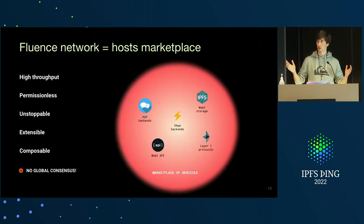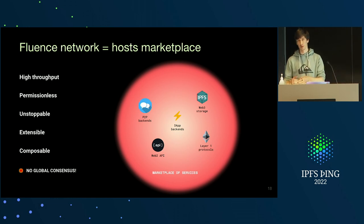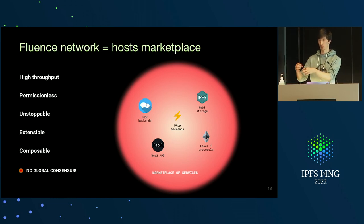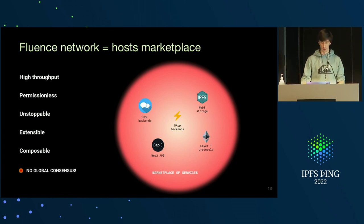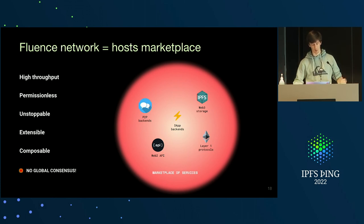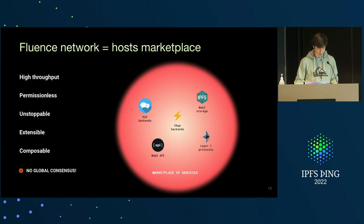The network is heterogeneous — every Fluence node is different, every Fluence node has a different amount of WASM it can execute. So you can imagine a marketplace of services, or pieces of backends of applications.